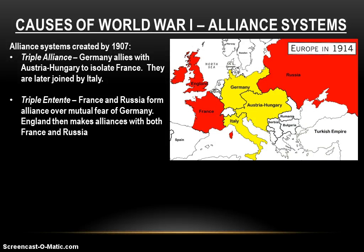First, we have the Triple Alliance. Germany makes an alliance with Austria as a way of isolating Germany's enemy, France. These two are later joined by Italy, a relative newcomer to being a united country in Europe that was looking for strong friends — that's why they end up siding with Germany and Austria. On the other side, you have the Triple Entente — that's a French word meaning 'friendly agreement.' Leave it to the French.